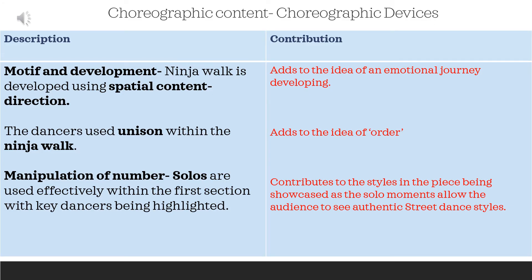You could also be asked about choreographic devices. Three examples from this section are: motif and development — the ninja walk is developed to use changing spatial direction, adding to the idea of the emotional journey developing; unison — the dancers use unison within the ninja walk, adding to the idea of order; and manipulation of number — solos are used effectively in the first section, with key dancers highlighted to showcase their specific styles, allowing the audience to see these authentic street dance styles.